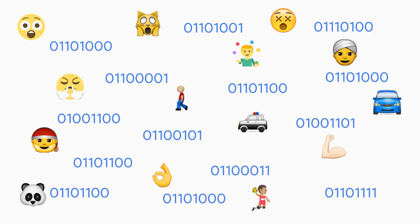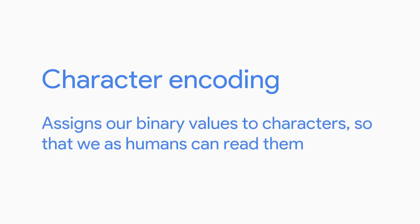It's all thanks to character encoding. Character encoding is used to assign binary values to characters so that we as humans can read them. We definitely wouldn't want to see all the text in our emails and web pages rendered in complex sequences of zeros and ones. This is where character encodings come in handy. You can think of character encoding as a dictionary — it's a way for your computer to look up which human character should be represented by a given binary value.